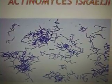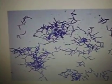Here's a picture of the actual bacteria. You can see that it's gram-positive, denoted by the deep purple staining, due to the thick peptidoglycan layer of the bacteria. And you can also see that it's a bacillus-shaped bacteria.